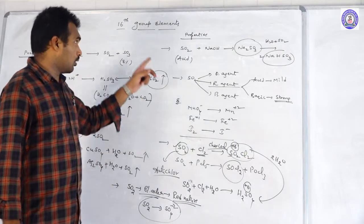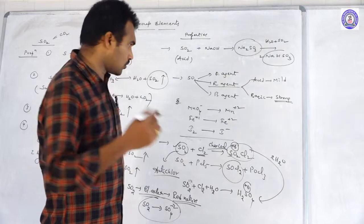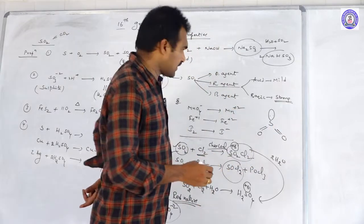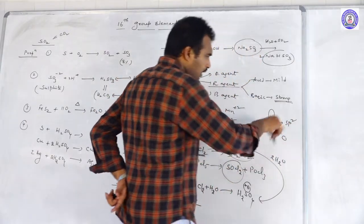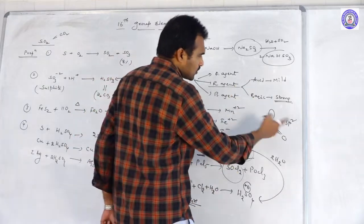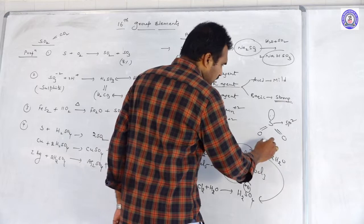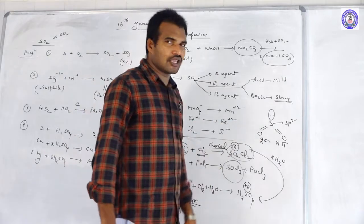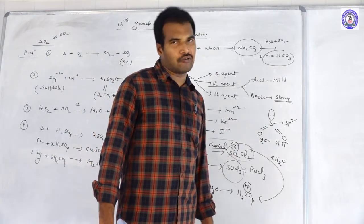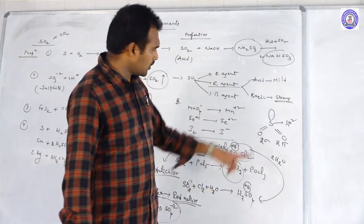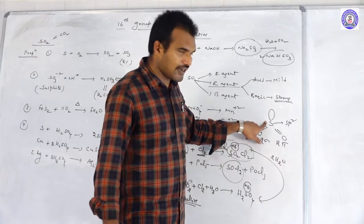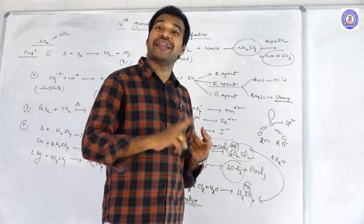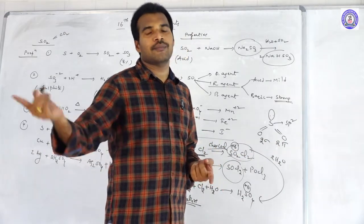The bleaching action of SO2 is due to its reducing nature — not oxidizing — so it is a temporary bleach. During this bleaching, SO2 itself undergoes oxidation to SO4²⁻. The structure of SO2 is S with two double bonds to O and one lone pair, with SP2 hybridization, angular/bent shape, two sigma and two pi bonds — one pi formed by p-pi d-pi overlap and another by d-pi d-pi overlap.